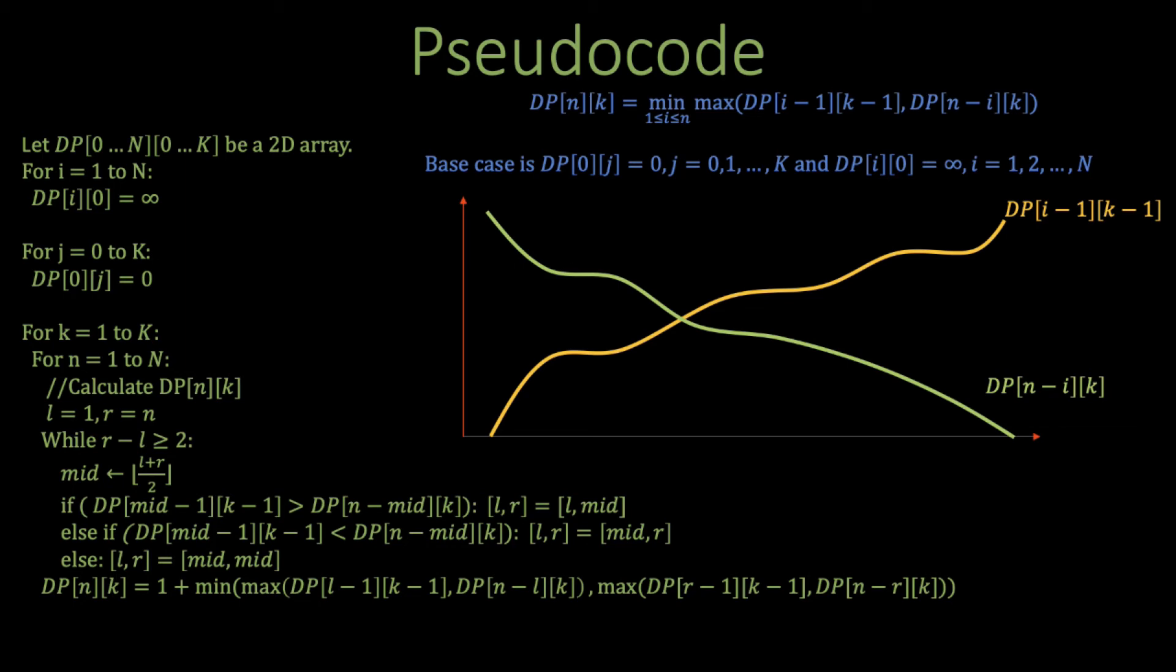Once the loops are finished, we can finally return the value saved in DP[N][K] as the final answer. This algorithm takes O(K·N·log N) time and O(K·N) space. Thank you for watching the video. This is part 2 of the super egg drop problem. If you enjoyed the video, please feel free to like and subscribe to the channel. Also, if you're feeling rather generous, I'll leave a link to my Patreon in the description. I'll see you in the next video.